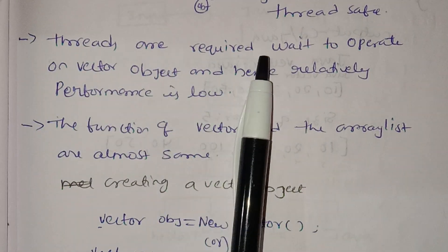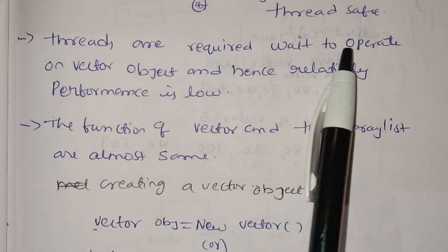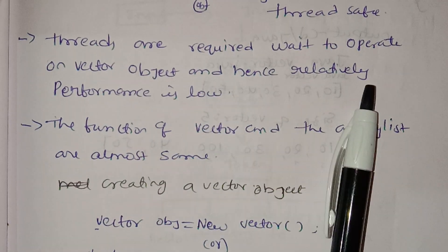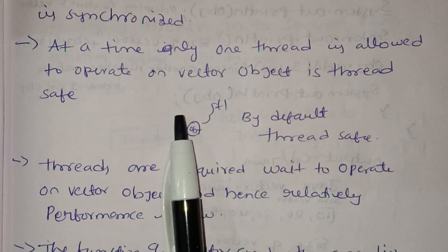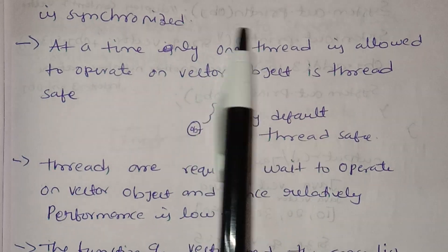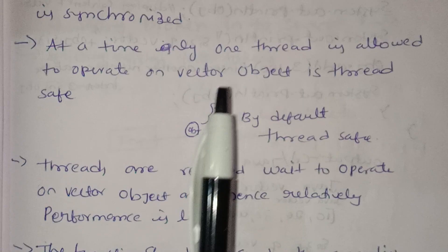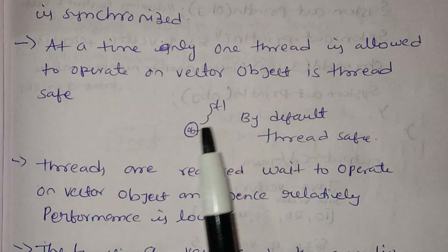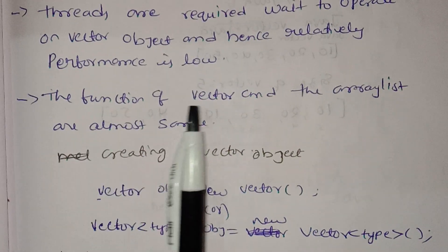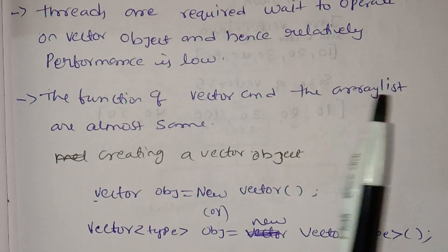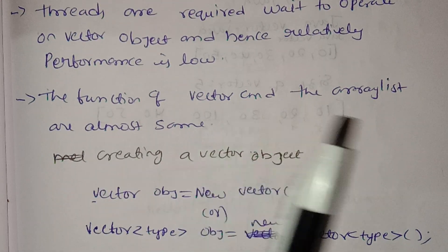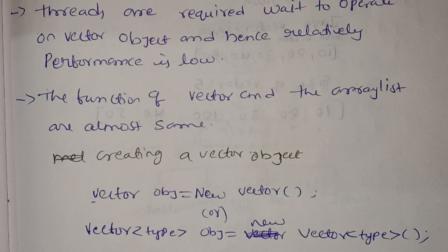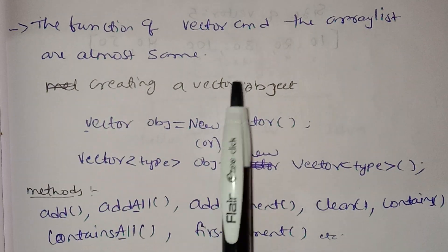By default, Vector is thread-safe. However, threads are required to wait to operate on the Vector object, so relatively performance is low — thread1 waits, then thread2. The functionality of Vector and ArrayList is almost the same.